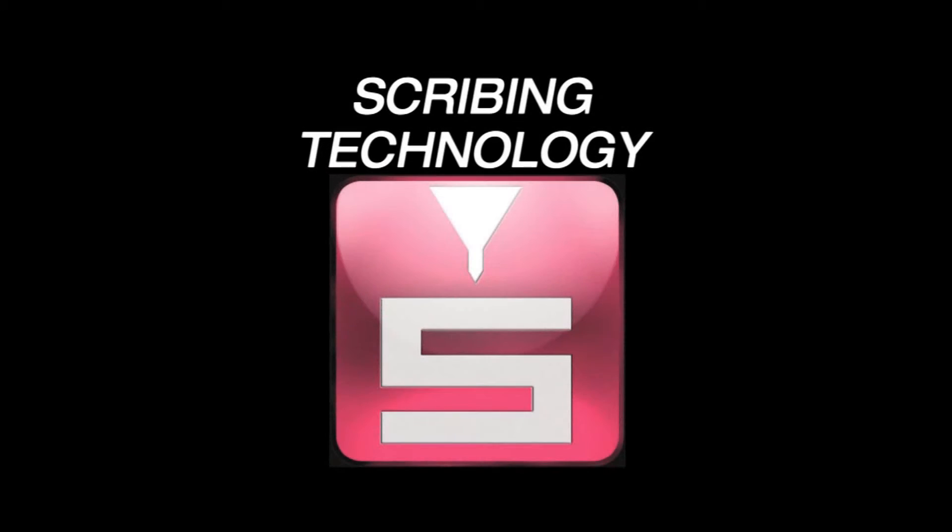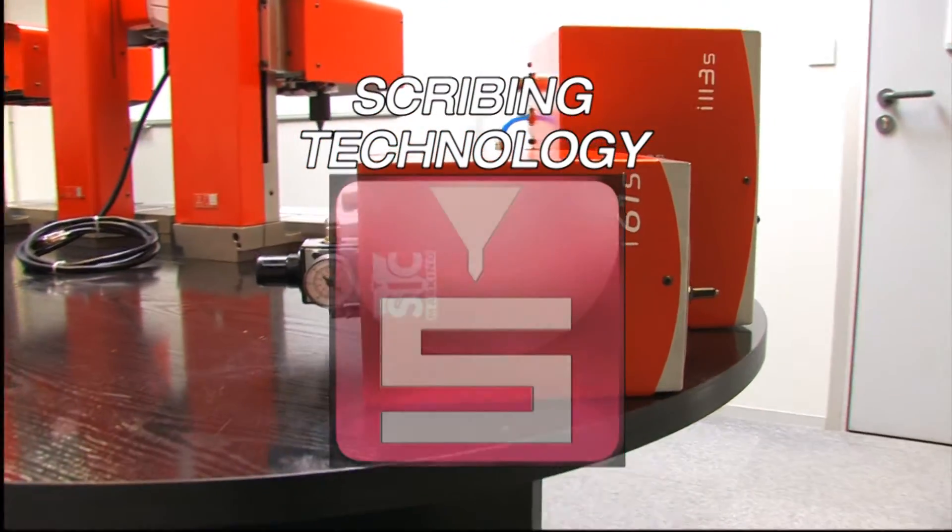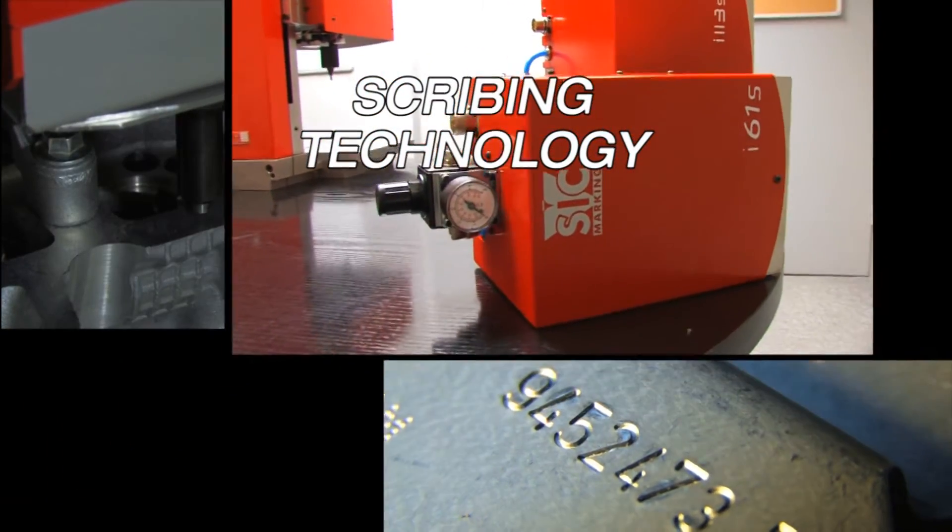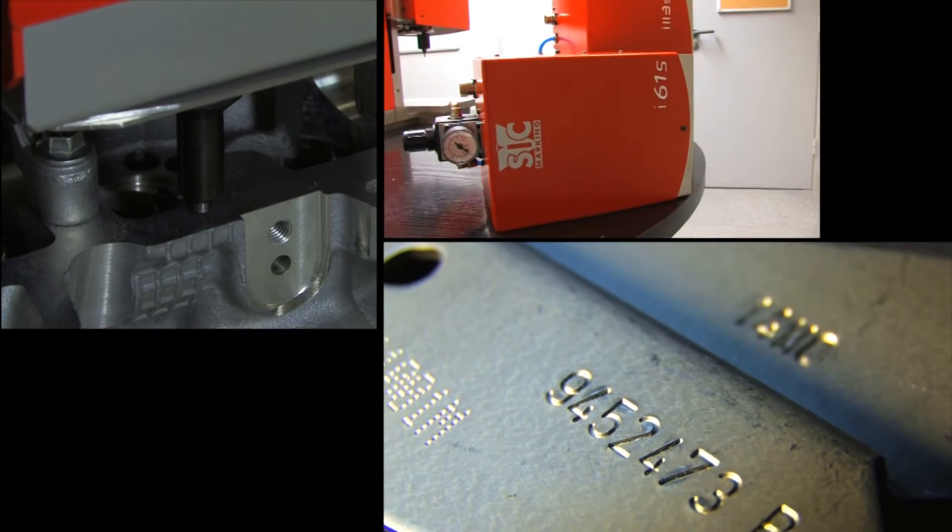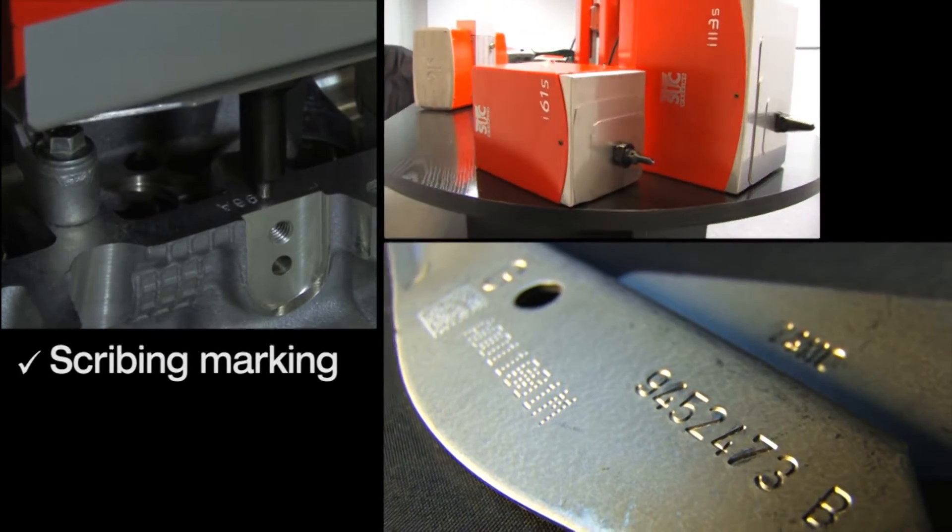Traceability of parts is essential for compliance with ISO quality standards. Scribing marking allows manufacturers to automate marking operations and ensure a high level of control.